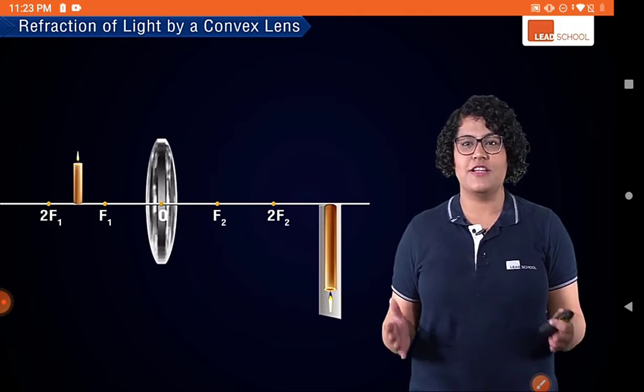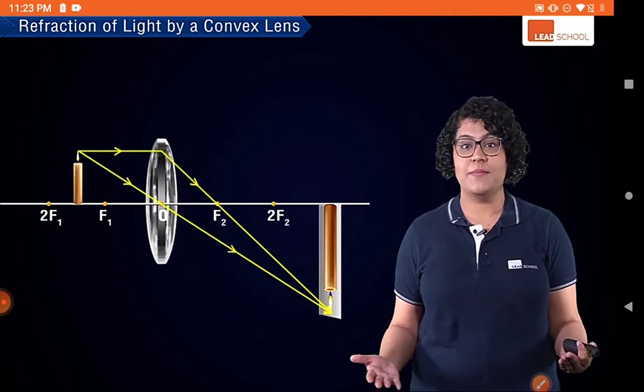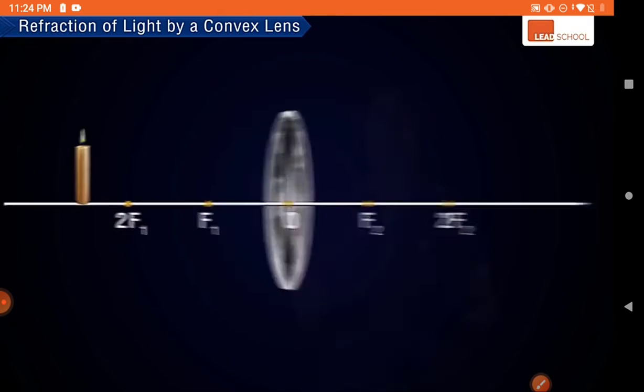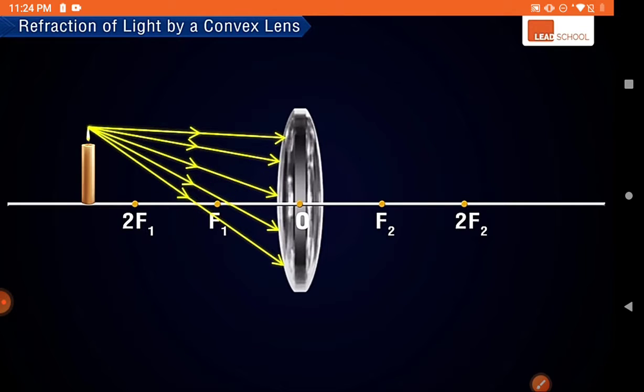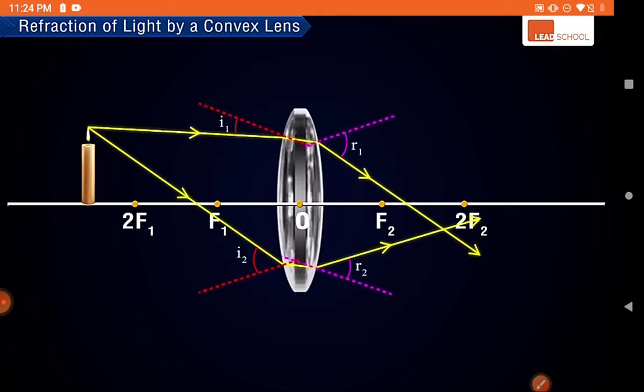In this video we will learn how to draw ray diagrams to represent the formation of images by a convex lens, which will help us determine the position and characteristics of the image formed. In a ray diagram we trace the path of rays from an object incident on the lens. Since there are infinite such rays, we choose rays that follow a predictable path after refraction.